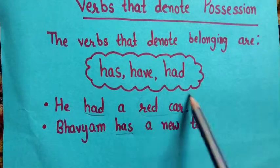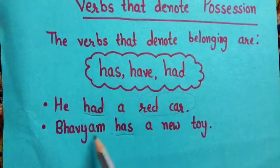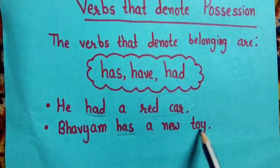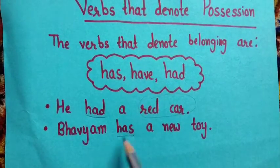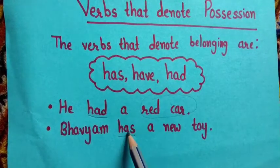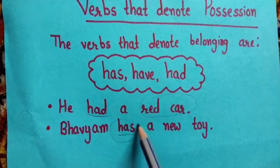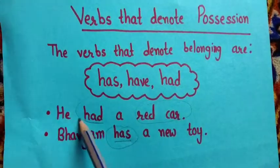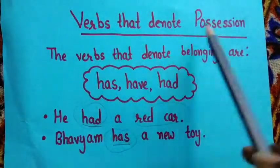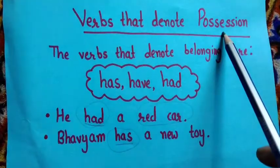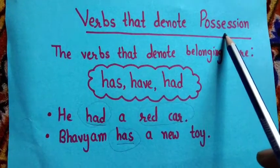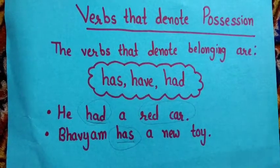Bhavyam has a new toy. So what does he have? He has a new toy. So these are the verbs that denote possession or belonging of something.